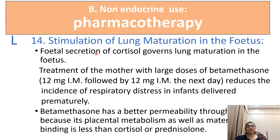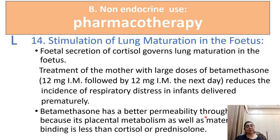Corticosteroids are used for stimulation of lung maturation in the fetus. In premature labor, a large dose of betamethasone — 12 milligram intramuscular, two doses — can be given to the mother to reduce the incidence of respiratory distress syndrome in the prematurely delivered infant. Betamethasone is the preferred drug as it has better permeability to the placenta, and its placental metabolism and maternal protein binding are less than cortisone and prednisolone.